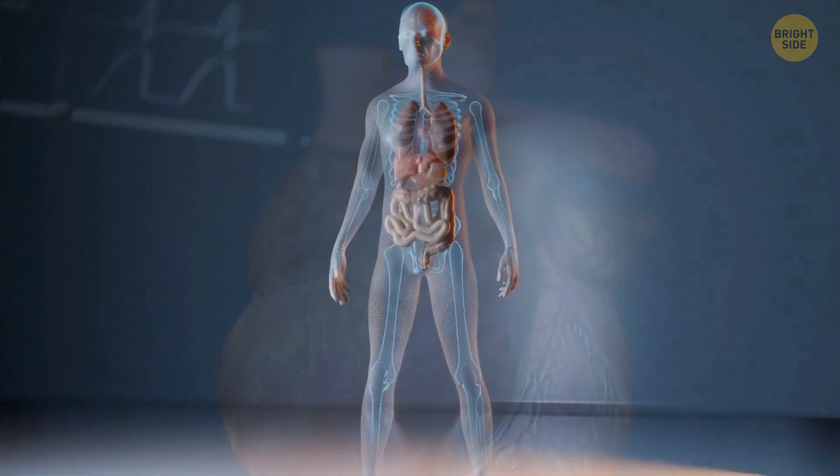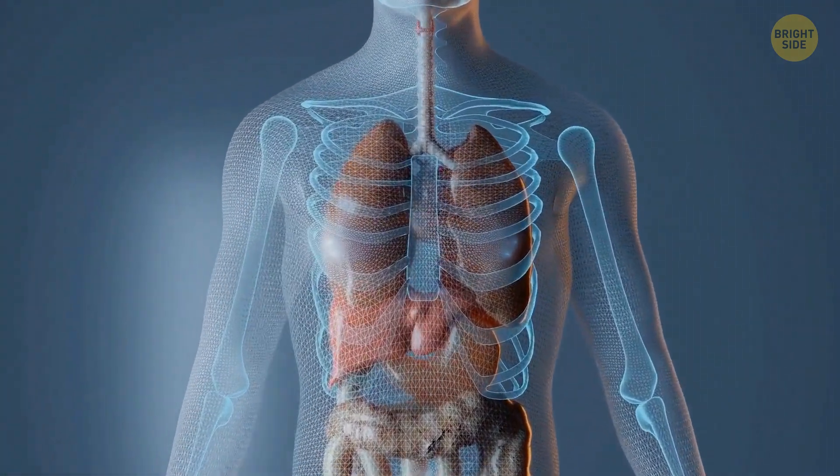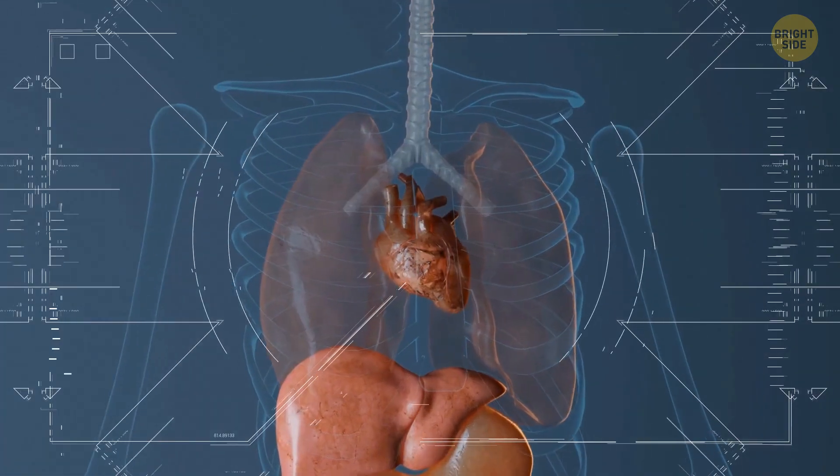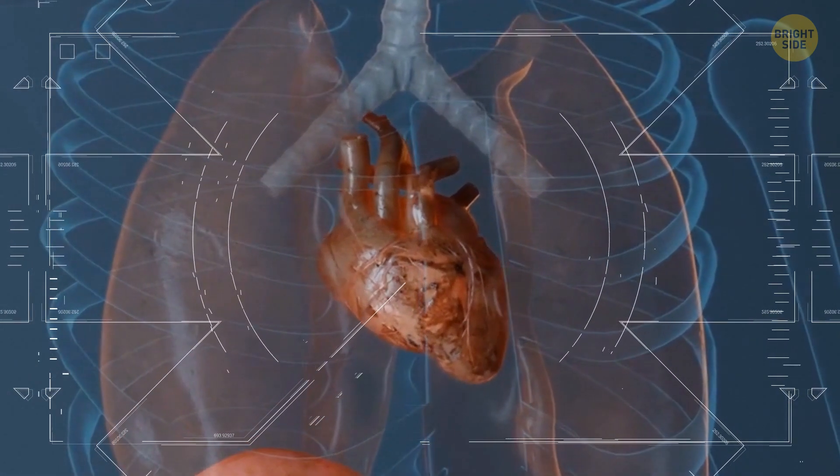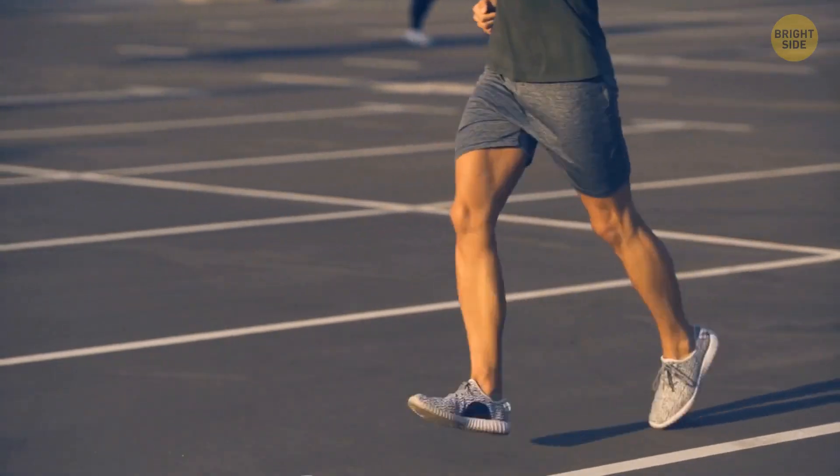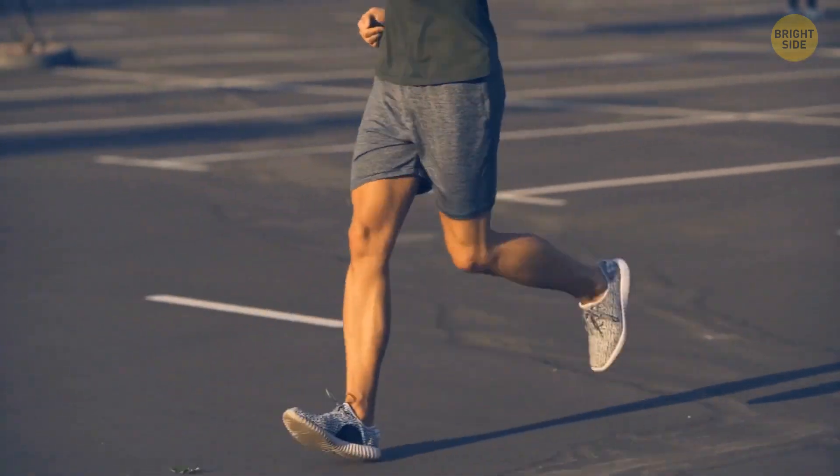On average, doctors say adults have anywhere between 60 to 100 heartbeats per minute when they're resting. Now, the fitter you get, the less pressure you put on your heart. And you might even end up having a heart rate as low as 40 beats per minute.